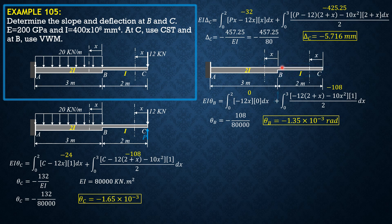So EI delta B equals integral 0 to 2 of negative 12x times 0 dx, then plus integral 0 to 3 of negative 12 times 2 plus x minus 10x squared times x, divided by 2.